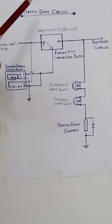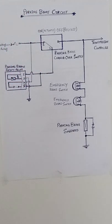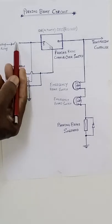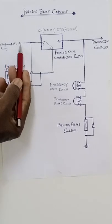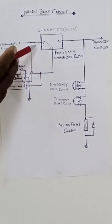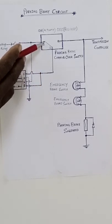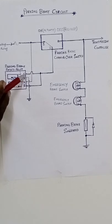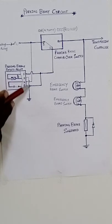Power from the battery goes to pin number one of the switch, to pin three, and then it comes to pin number one of this relay to the coil. The other point of this coil is already grounded.